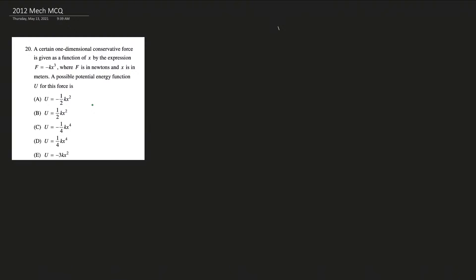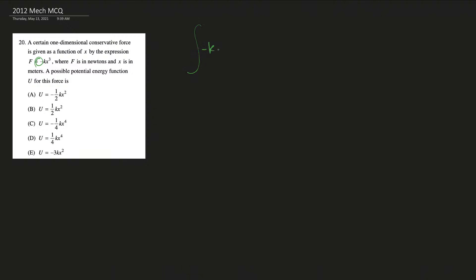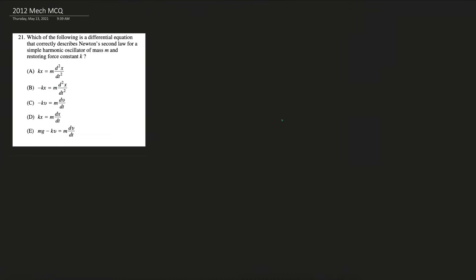Number twenty: a conservative force is given by F = -kx³. The potential energy function is U = -∫F dx = -∫(-kx³)dx = ∫kx³dx = kx⁴/4. The answer is D: U = kx⁴/4.